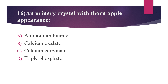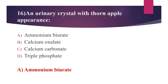Sixteenth question: a urinary crystal with a thorn apple appearance. Option A: ammonium biurate. Option B: calcium oxalate. Option C: calcium carbonate. Option D: triple phosphate. The answer is option A, ammonium biurate. Ammonium biurate is found in alkaline urine. It has a thorn apple or polyhedral shape. They are deeply colored, from dark yellow to brown. In UTI and some other medical conditions, ammonium biurate crystals may appear.